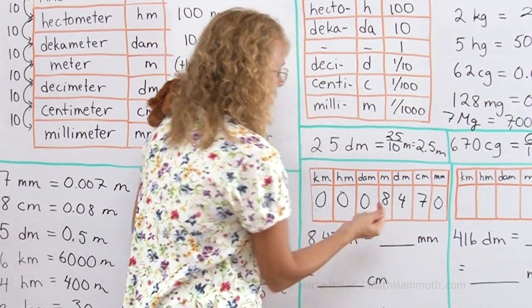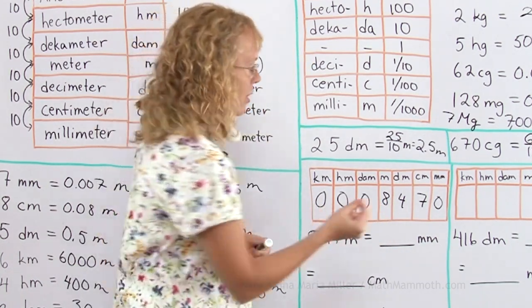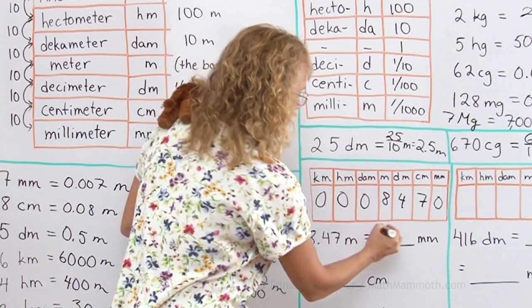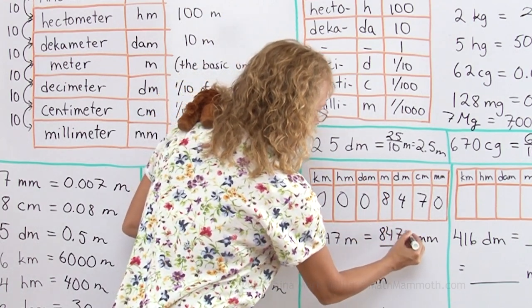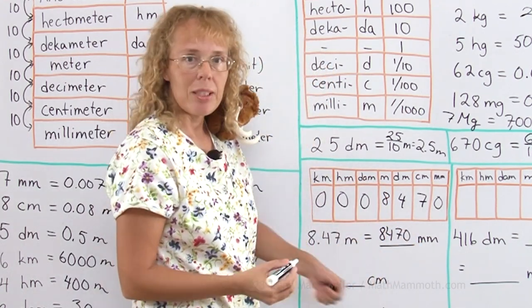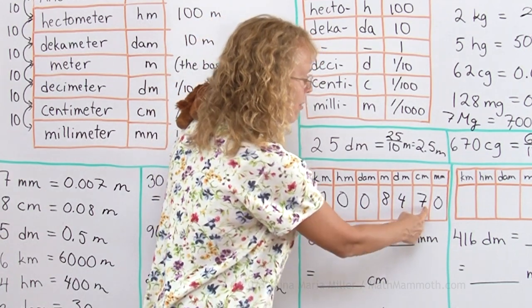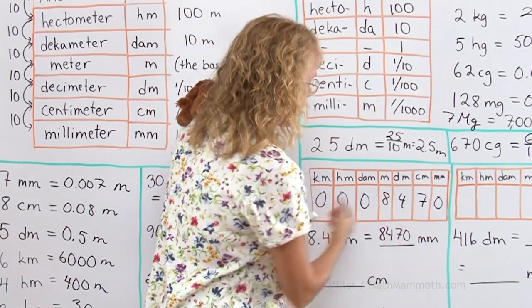So basically, reading it in millimeters, I move my decimal point right after millimeters. Reading it in centimeters, I move my decimal point here right after centimeters. And so I get 847.